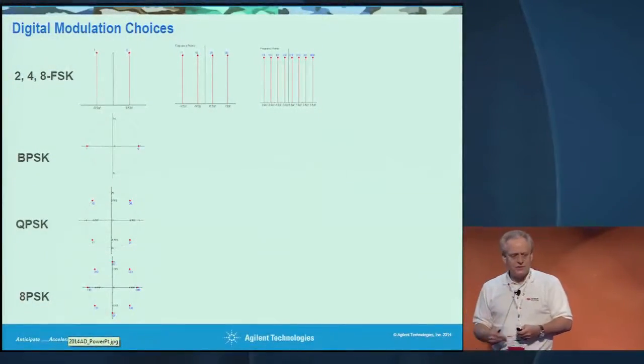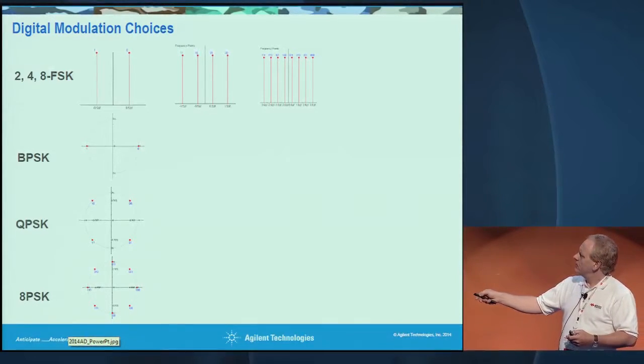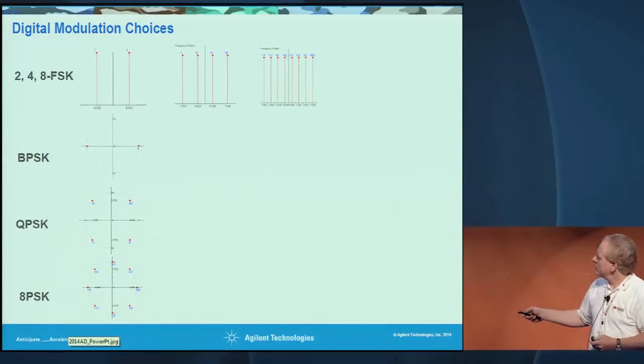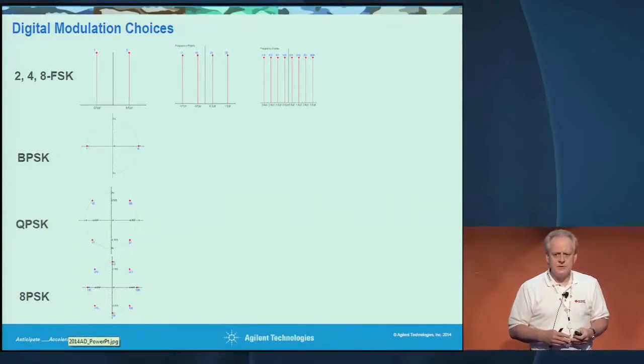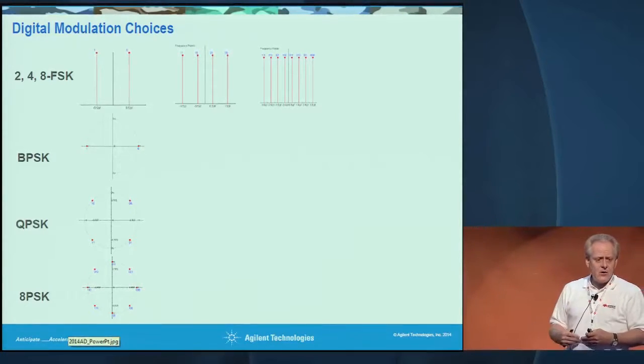In older formats, simpler modulation schemes were generally used. BPSK is pretty bulletproof, switching between two states, and because of limited power, constant envelope modulation was used. The newer formats are 8PSK, 16 APSK, and 32 APSK. Higher modulation formats are now being used to pack more bits per symbol and deliver more data per unit time for a given amount of spectrum, so spectrum occupancy is very high.